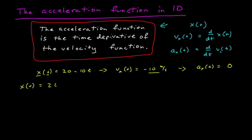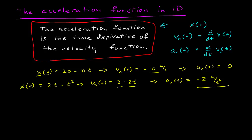So now we'll do x of t equal to 2t minus t squared. If I differentiate this once, I get the velocity function in time, which is 2 minus 2t. And now I can differentiate this and get the acceleration as a function of time. Differentiating 2 gives 0, and differentiating minus 2t gives minus 2. And now meters per second squared is the units of acceleration.